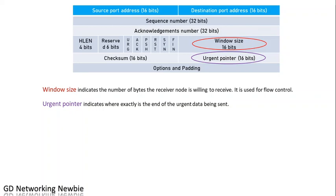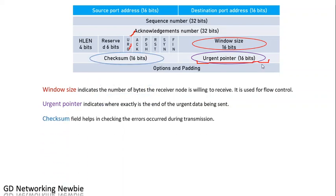The urgent pointer actually indicates where exactly the end of the urgent data is. When you send data that is really urgent, you set the urgent bit to 1, which indicates we need to give significance to this part — and the urgent pointer field indicates where the end of the actual urgent data is. The checksum field is used in the data link layer as well. It is there to help check for errors which may have occurred during the transmission from one point to another — from the client to the server machine.